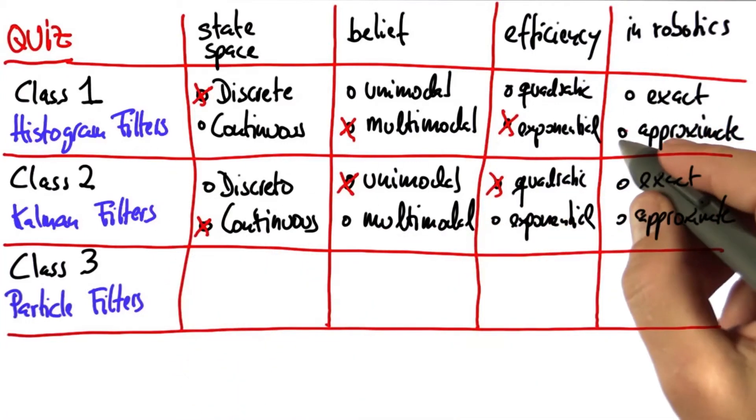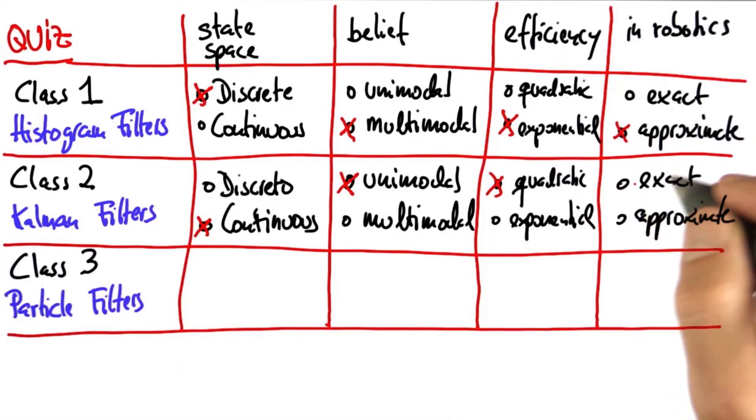Well, histogram filters tend to be approximate because the world tends not to be discrete. So in localization, for example, it's clearly an approximate filter.